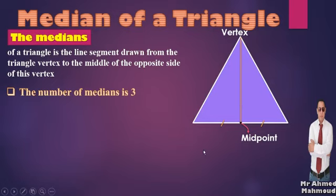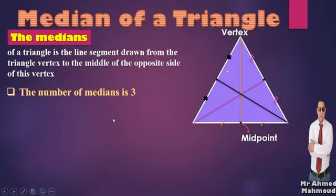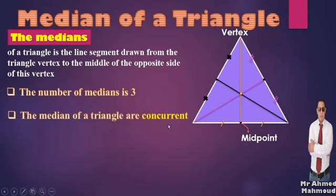The medians are drawn like this - connecting each vertex to the opposite midpoint. We have the first one, then by connecting this vertex to the opposite midpoint we get another median, and connecting the third vertex to its opposite midpoint gives us a third median. Now we have three medians. I notice that all three medians intersect at one point. This point is called the point of intersection of medians - a property of the medians. The medians intersect at one point, or we can say medians of a triangle are concurrent.